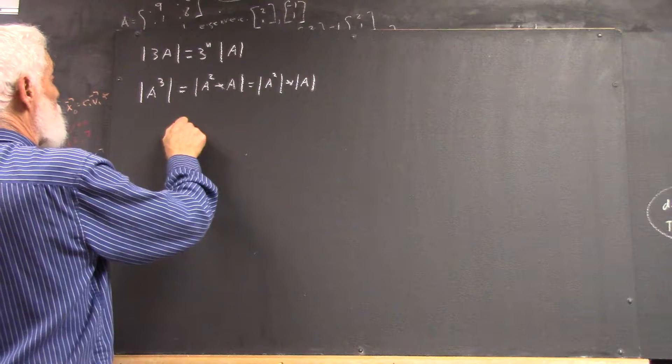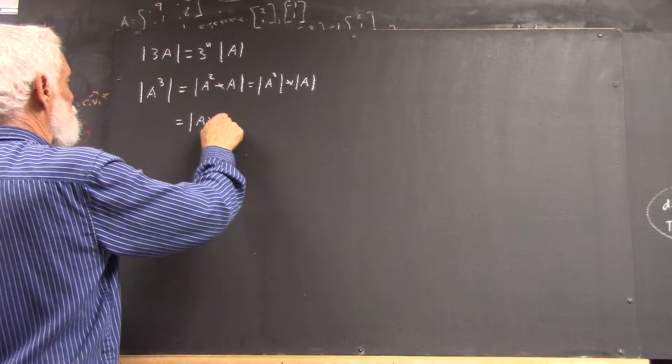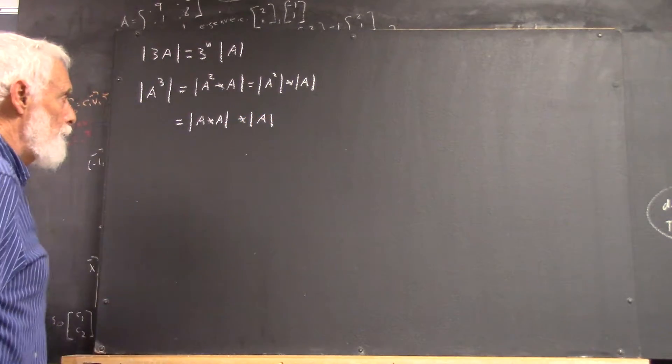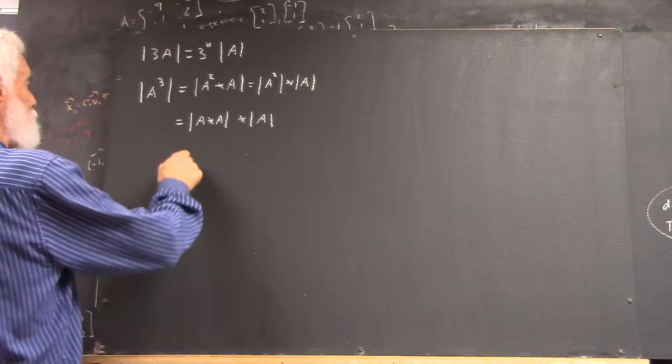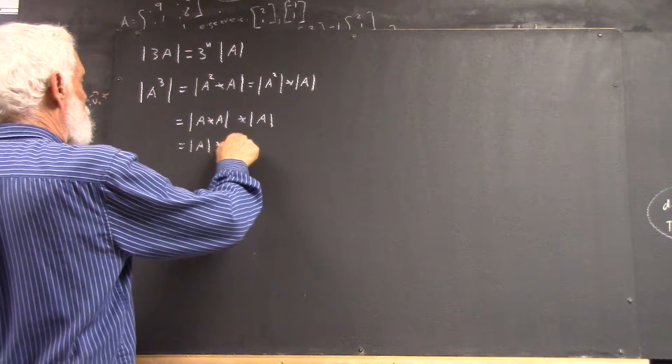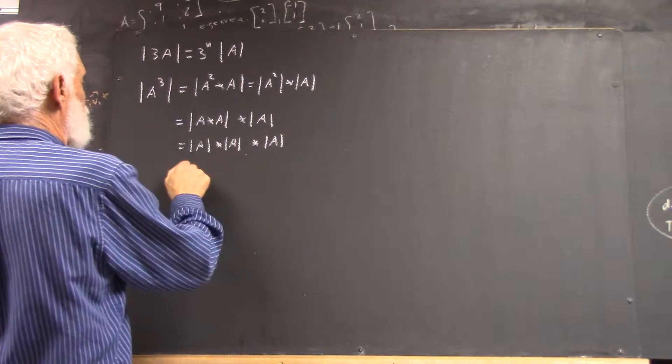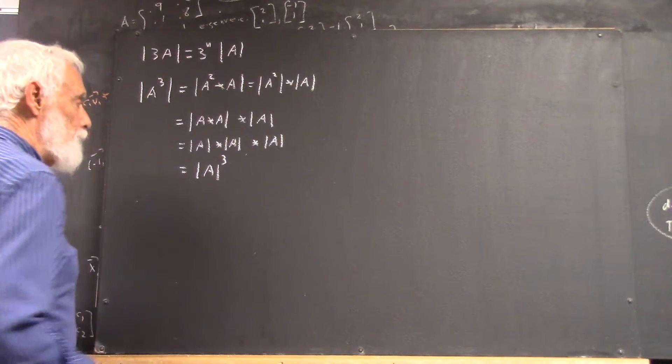Well, what's that equal? A squared is A times A. So this is the determinant of A times the determinant of A times the determinant of A, which is the cube of the determinant of A.